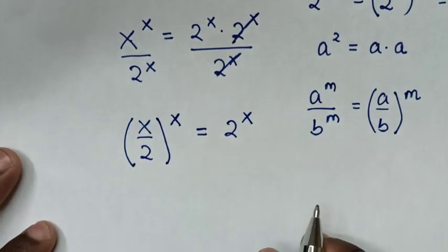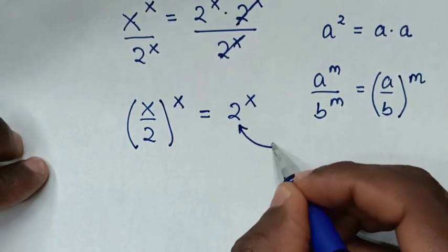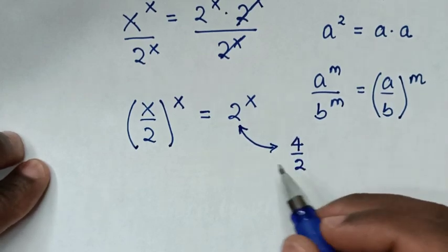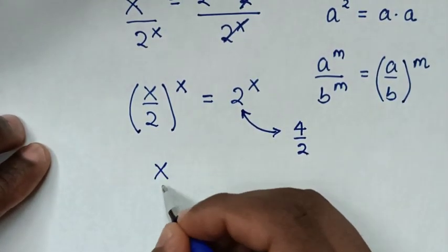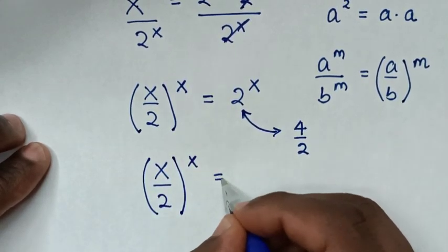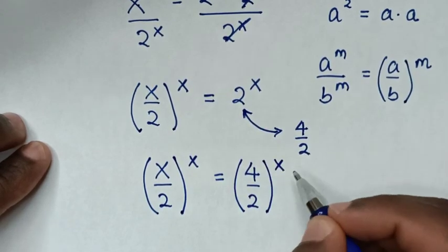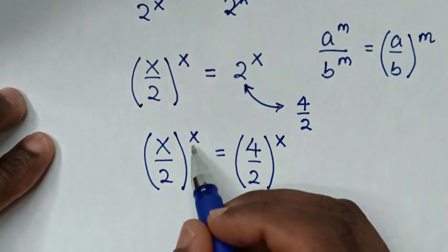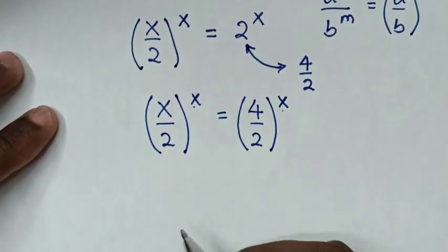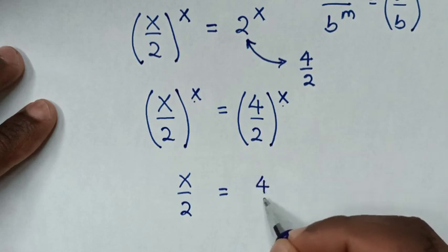Because we have the same power of x on both sides, we will make it easier to compare the bases. Then 2 is the same as 4 over 2, so we substitute 4 over 2 into here. Our equation will be x over 2 bracket power of x is equal to 4 over 2 bracket power of x. Because we have the same power of x, we will compare the bases.